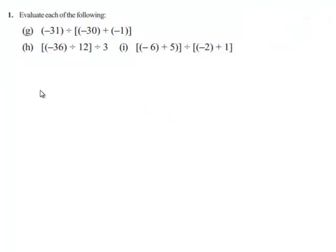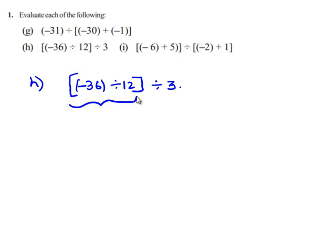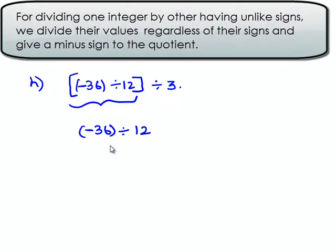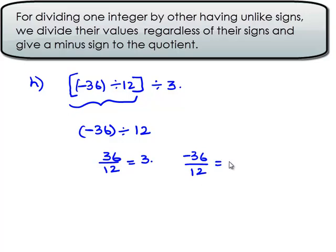We will see the next problem. That is negative 36 divided by 12 within the brackets, which is whole divided by 3. First we will solve the values within the brackets. That is negative 36 divided by 12. First we divide their values regardless of signs: 36 divided by 12 gives 3. When we divide two integers having opposite signs, we always obtain a negative sign in the answer. That is negative 36 divided by 12 gives negative 3.